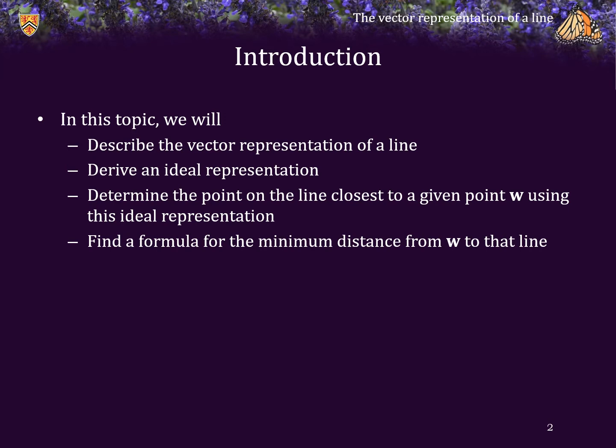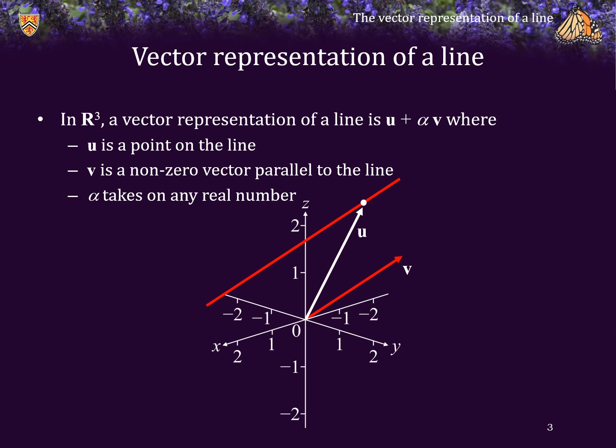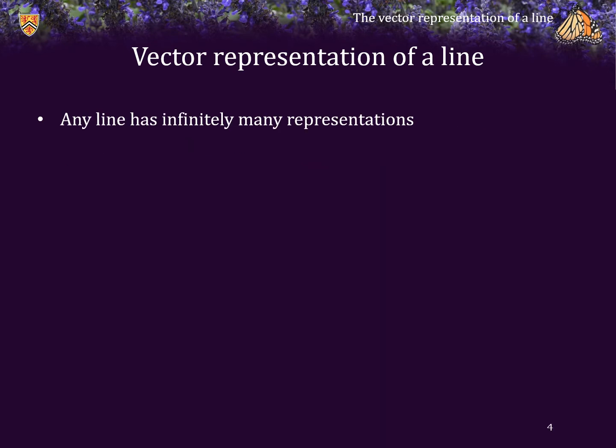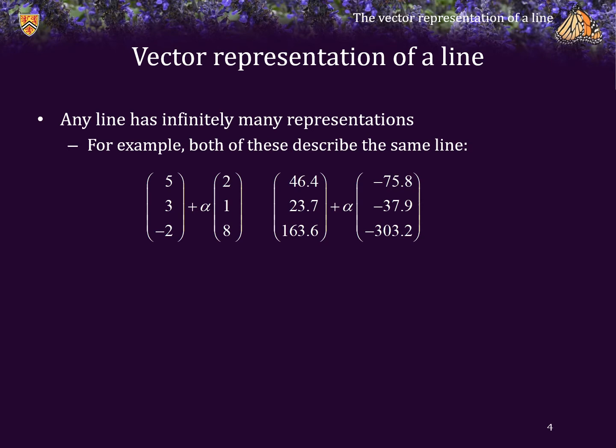Now in R³, or in fact in any vector space in general, a vector representation of a line is of the form u + αv, where u is any point on the line, v is a nonzero vector parallel to the line, and α takes on any real number. Any line has infinitely many vector representations. For example, both of these vector representations represent the exact same line. So the question is: is any one representation better than the others?